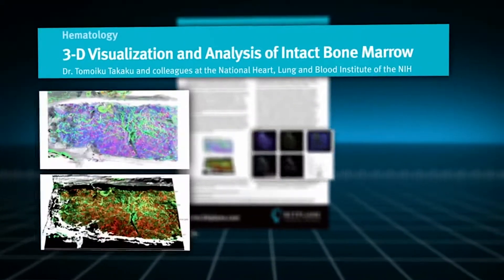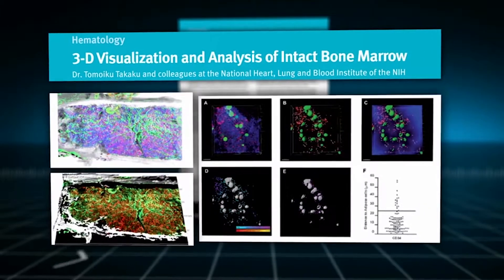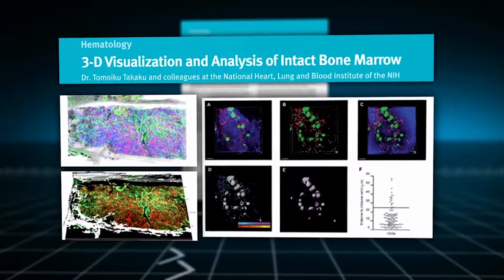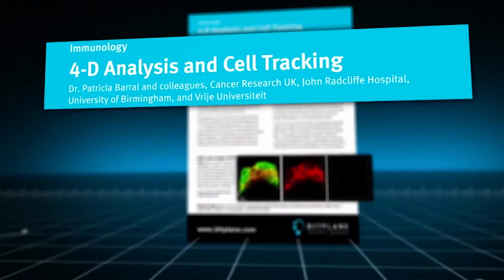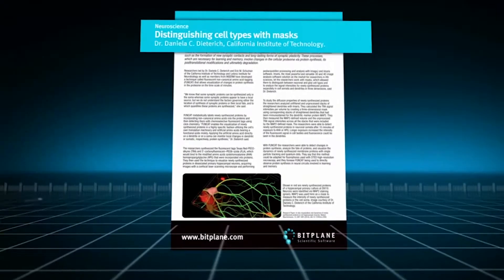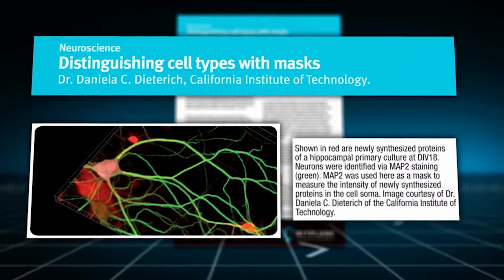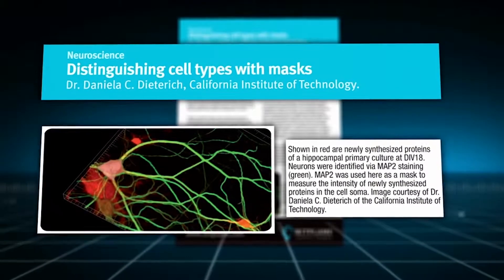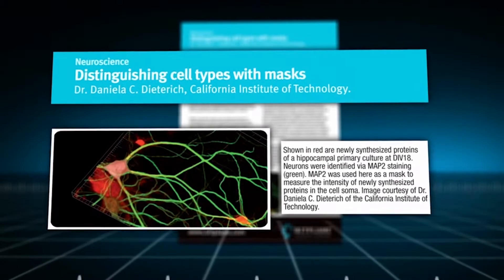To date, Imaris has been instrumental for studies involving 3D tracking of bone marrow cells. It was applied to look at immune response and T cell characteristics. Complex processes like learning and memory formation have also been supported with Imaris visualization and analysis.